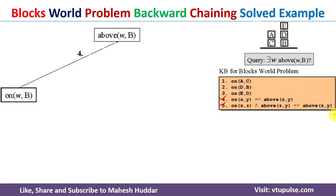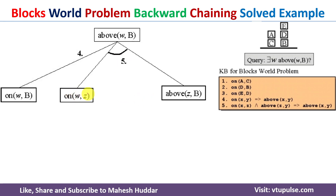The other possibility is rule 5, where above(x, y) can be written as on(x, z) AND above(z, y). Again x is equivalent to w and y is equivalent to b, so we get on(w, z) and above(z, b) as two sub-goals. To satisfy the root goal node we must either satisfy on(w, b) alone, or satisfy both on(w, z) and above(z, b).